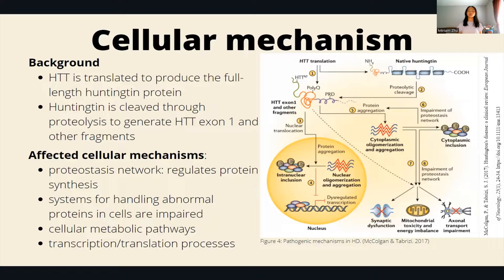There are currently three different theories about how the mutation causes Huntington's symptoms, and scientists have not agreed on one concrete theory. The first theory, which I think is the most promising, involves a mutated gene with too many glutamines that is translated to produce the full-length Huntington protein.